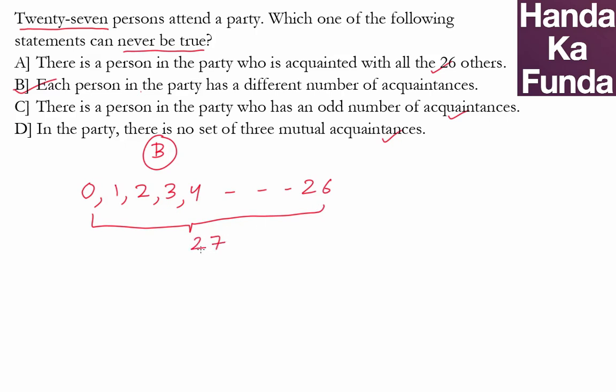But is this possible? Let's say there is a person A who knows no one. And then there is a person X who knows all 26. How is this possible? If A knows no one, then A does not know X.